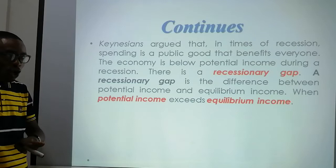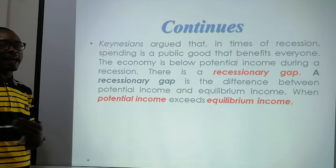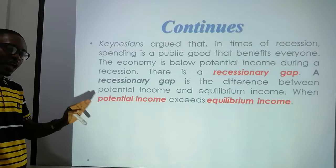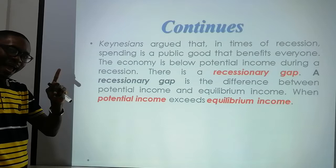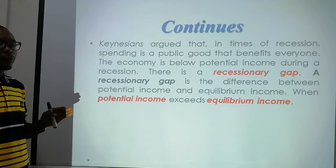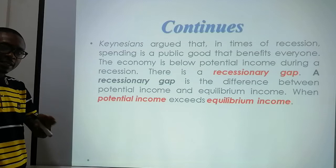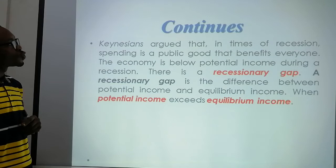The economy is below potential income during a recession. A recession means a slowdown of economic activities — the country or economy is going backwards, things are slow. This coronavirus is a typical example of a recession, hence the government must spend more. There is also a recession gap, which is the difference between potential income and equilibrium income. When potential income exceeds equilibrium income, we call it a recession gap.